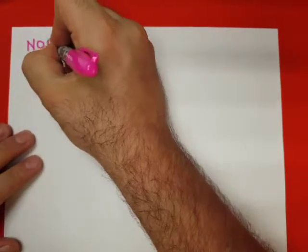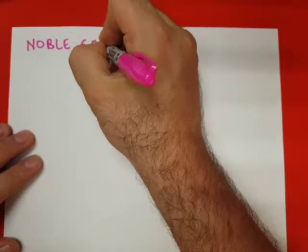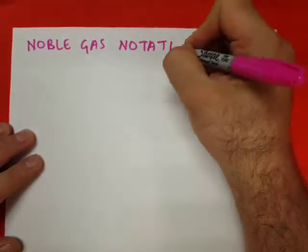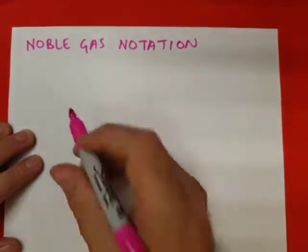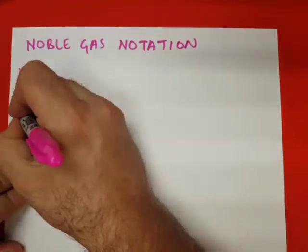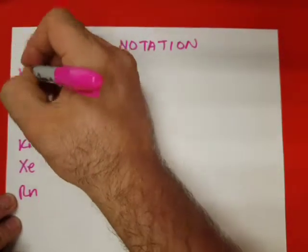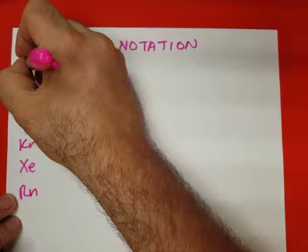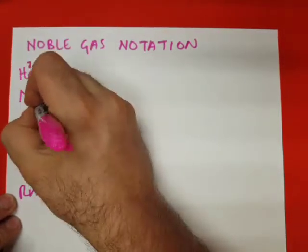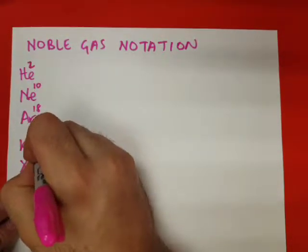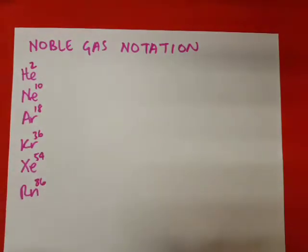Here, what we're going to do is we're going to take an element, and I'm going to write the title right here. Noble gas notation. And I'm going to draw a little cheat sheet. Remember, in order, helium, neon, argon, krypton, xenon, radon, with their respective atomic number, which is 2, 10, 18, 36, 54, 86. It's in your best interest to know these by memory, because they will help you.